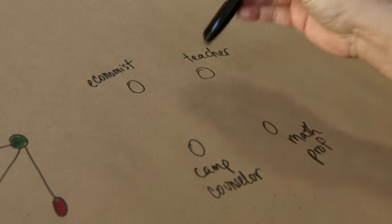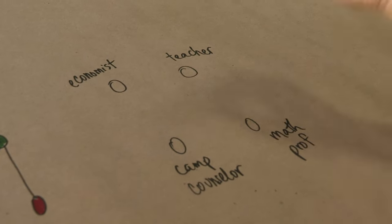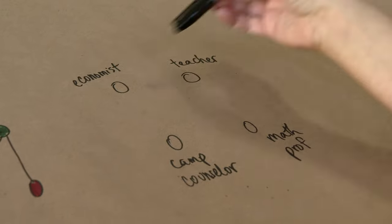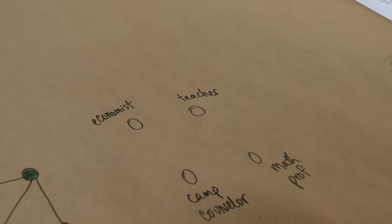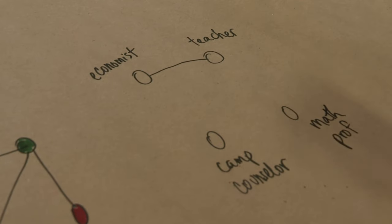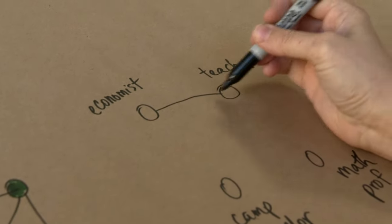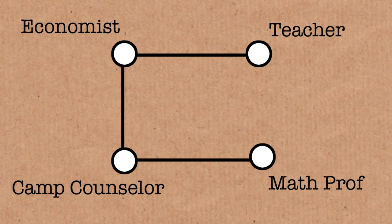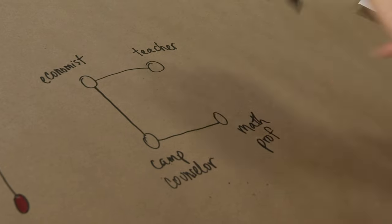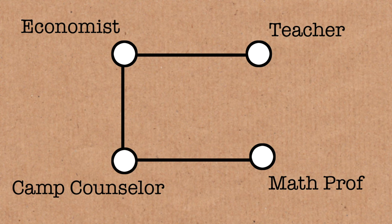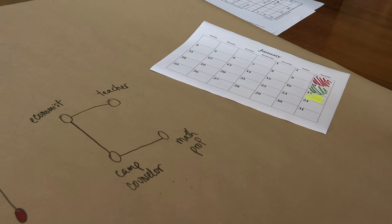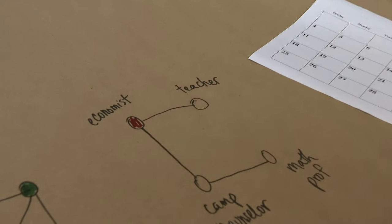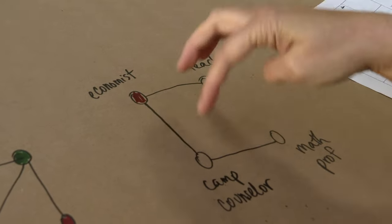What graph would we draw that would help us have good groupings for our party? The teacher would probably find things to talk about with the camp counselor — like managing groups of kids — and they could probably also talk with the math professor, but maybe they wouldn't have such an easy time striking up a conversation with the economist. So we're going to link things together if they don't get along well. We want to link the ones that don't get along, so that our coloring will separate those people. So teacher and economist, the economist and the camp counselor, the camp counselor and the math professor — those pairs get edges. But the other pairs get along fine. This is our graph, and now what we can do is try to color the graph — that's going to tell us which weekend to invite each person.